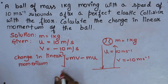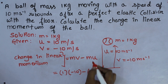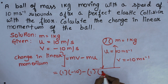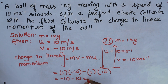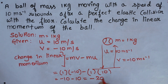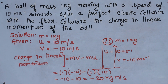Now substituting: mass is 1, final velocity is minus 10, initial velocity is 10. So: 1 into minus 10, minus 1 into 10. That gives minus 10 minus 10. Wait — minus into minus gives plus: minus 10 plus minus 10 gives minus 20. The unit is kg meter per second. So the change in linear momentum is minus 20 kg meter per second.